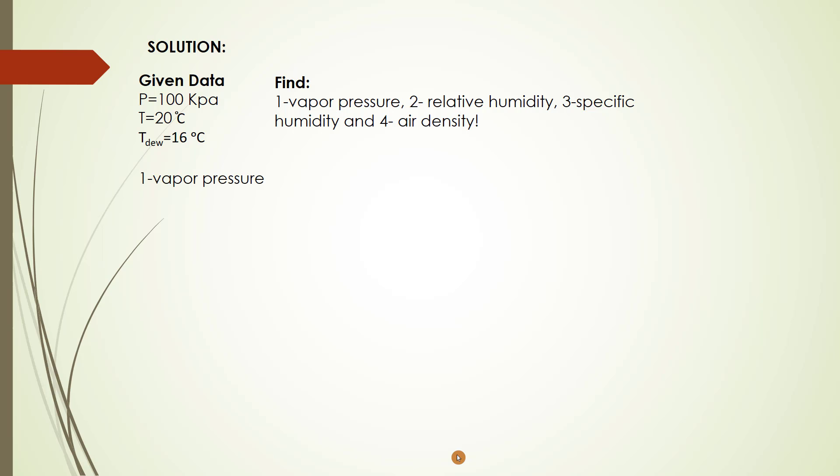The first one is vapor pressure. We have the equation for vapor pressure, and T sub d is the dew point temperature. So for finding vapor pressure, we have to use dew temperature. Vapor pressure equals 1818.882 Pascal. That is the solution for the first one.